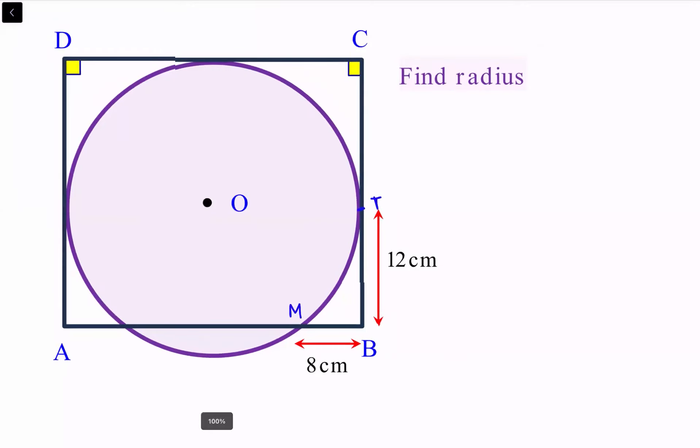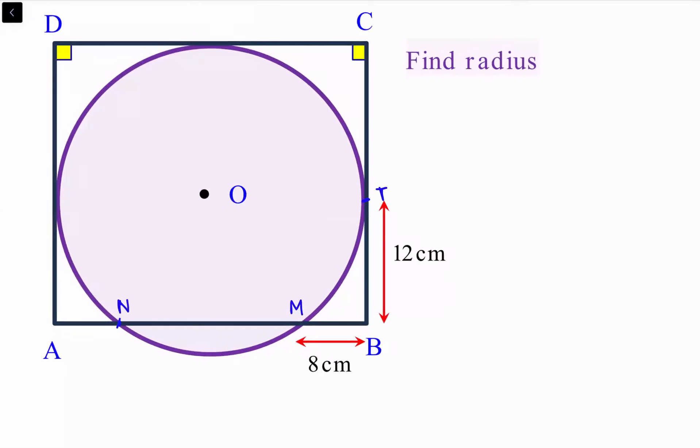Let's assume this point as point N. Now applying tangent secant theorem, that's already discussed in video number 26. As per tangent secant theorem, BT is a tangent and BN is a secant.